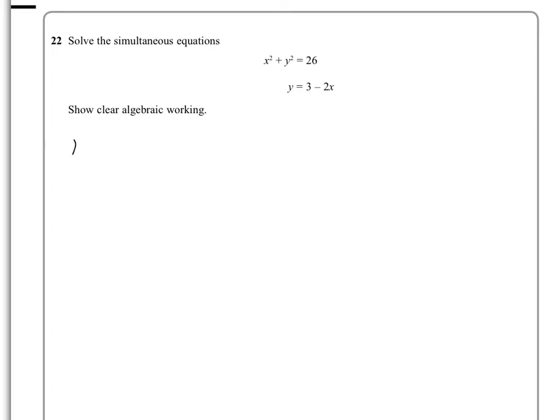So what we're going to end up with is x squared plus, now the y squared, obviously y is all of that now, so it's 3 minus 2x, and since it's squared we have to multiply it by 3 minus 2x, and that is equal to 26. When we multiply that out,